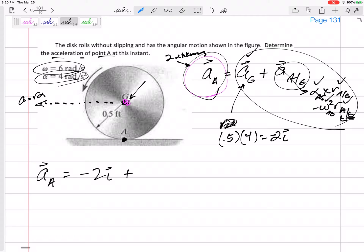Plus alpha, which is 4K. Positive or negative 4? Well, that is counterclockwise. So that would be positive 4K, crossed with from G to A, from G down to A, negative 0.5 in the J.